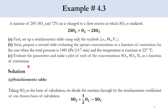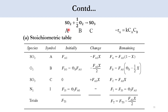The first task is to specify the limiting reactant. We take SO2 as the limiting reactant. Once specified, we make its stoichiometric coefficient 1 by dividing the whole equation by 2: SO2 + 1/2 O2 → SO3. Designating SO2 as A, oxygen as B, and SO3 as C, we can write the rate of reaction equation: −rA = k·CA·CB, as given in the problem statement.